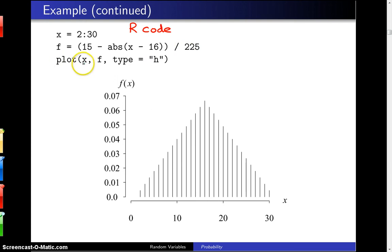And then we plot x on the horizontal axis, f on the vertical axis, the type equals h will give them as spikes, and here is the distribution, another symmetric probability mass function.